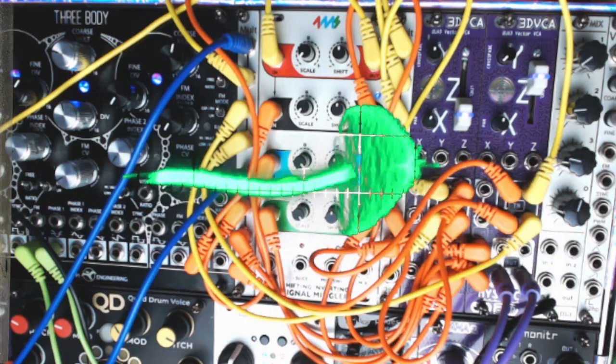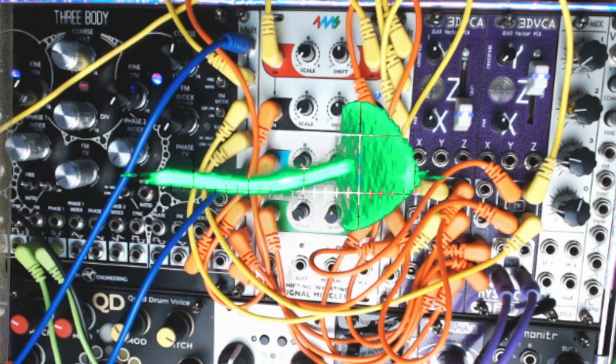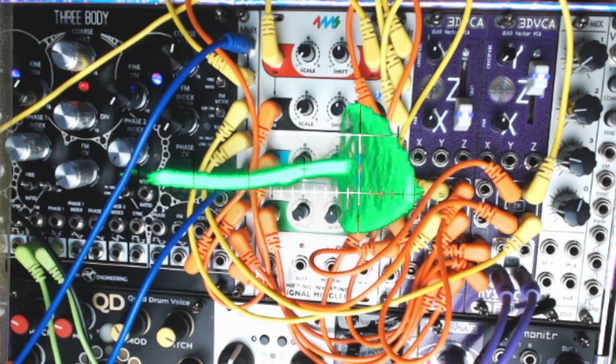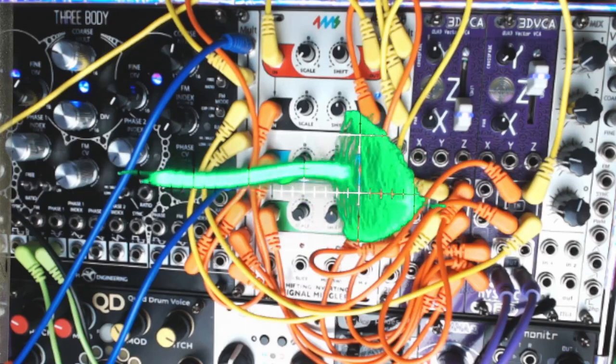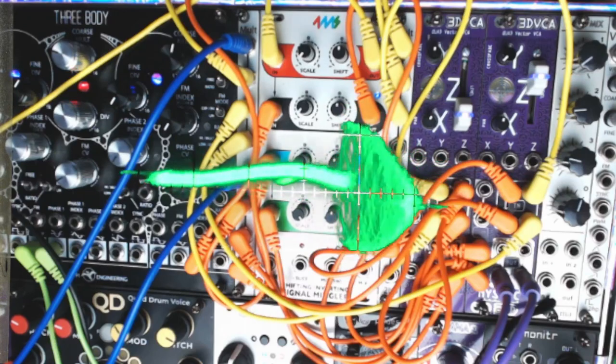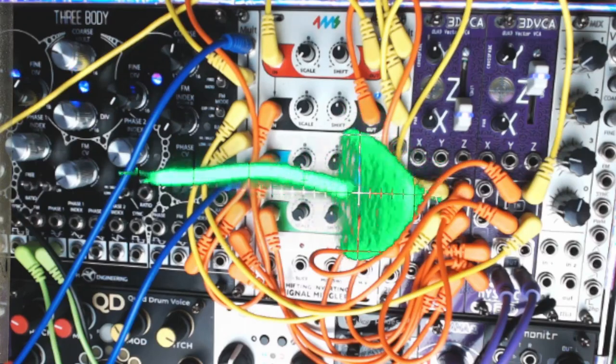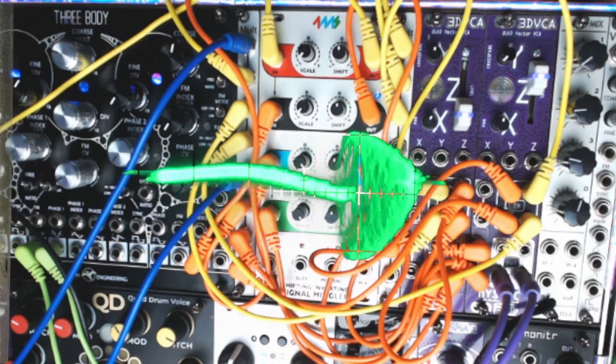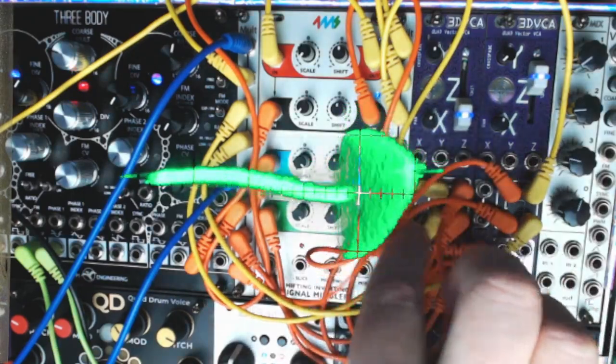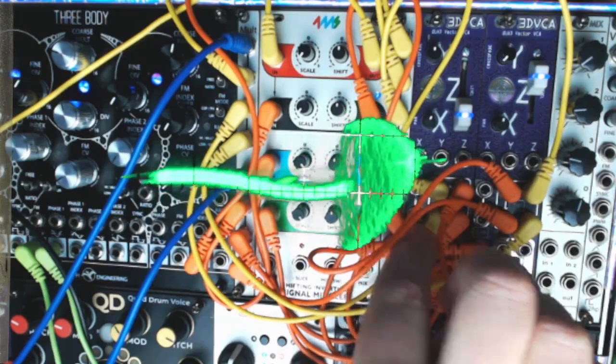From there we have a similar setup to our first 3DVCA with the inverted and non-inverted XY mushroom signals coming in, but we've swapped the east and west channels in order to mimic swapping the X and Y coordinates.